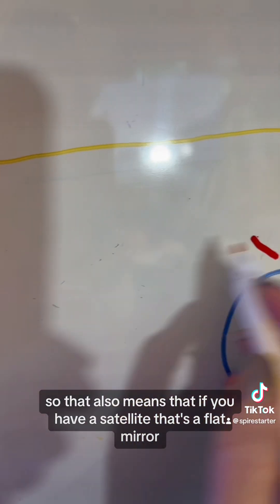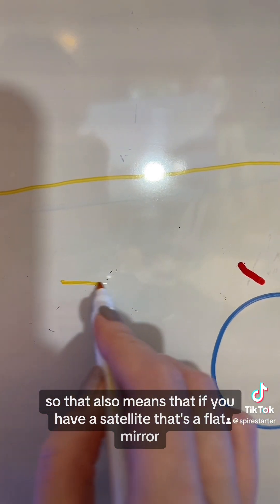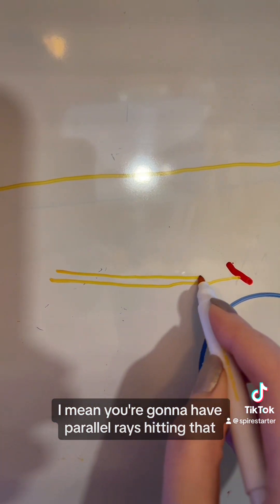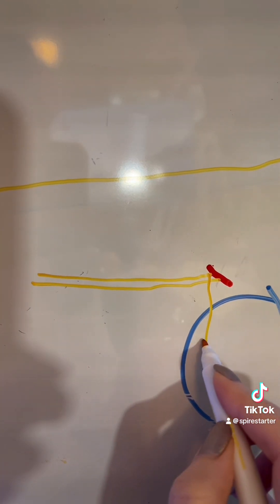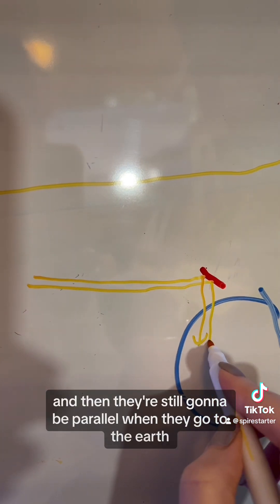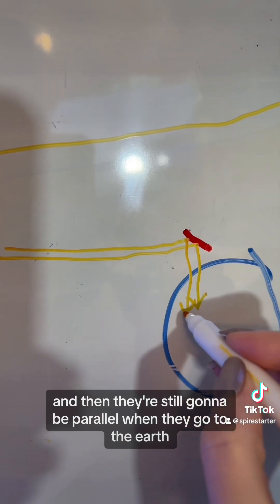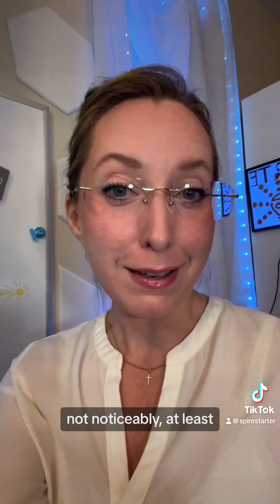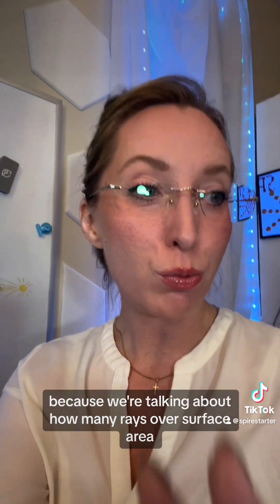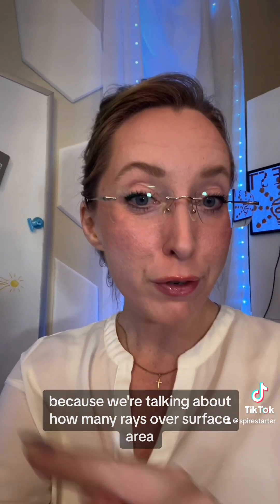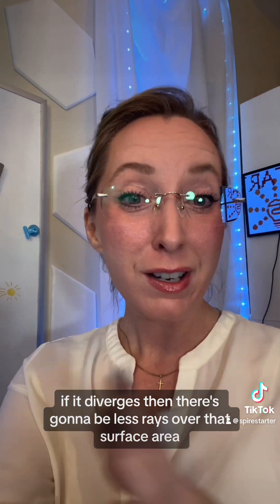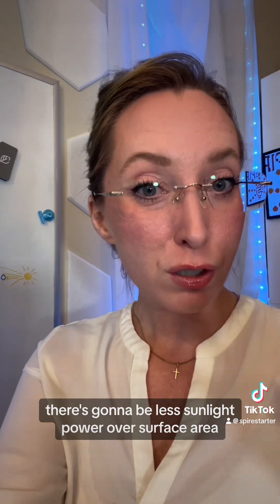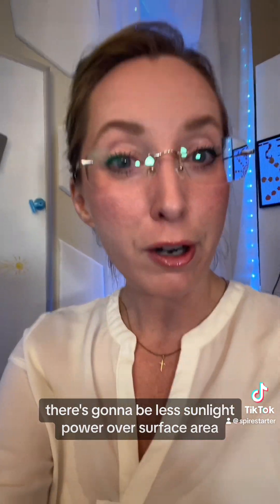So that also means that if you have a satellite that's a flat mirror, you're going to have parallel rays hitting that, and then they're still going to be parallel when they go to the earth down here. They're not going to be diverging, not noticeably at least. And that's what matters, because we're talking about how many rays over a surface area. If it diverges, then there's going to be less rays over that surface area, less sunlight power over a surface area.